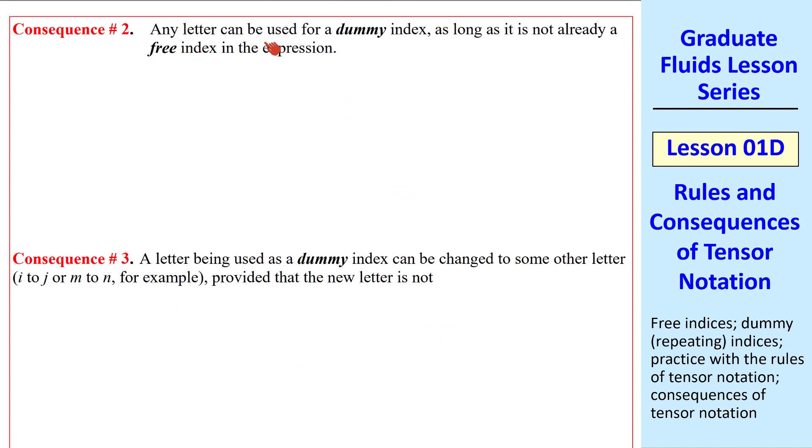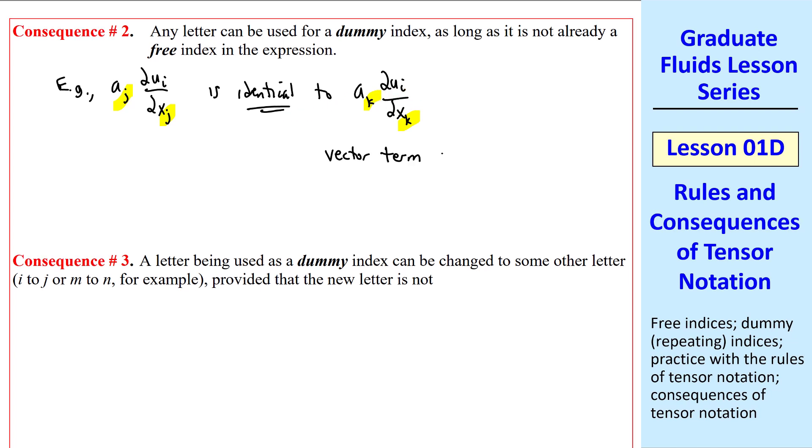Consequence 2, any letter can be used for a dummy index, as long as it's not already a free index in the expression. For example, aj del ui del xj is identical to ak del ui del xk, where the dummy index j was replaced by the dummy index k. But the free index i is the same, so this represents a vector term with 3 components. But of course for each i, we have to sum over the j or the k. If we expand this out for i equal 1, we have a1 del u1 del x1, plus a2 del u1 del x2, plus a3 del u1 del x3. That's true for either of these expressions. And you can also write this out for i equal 2 and i equal 3.